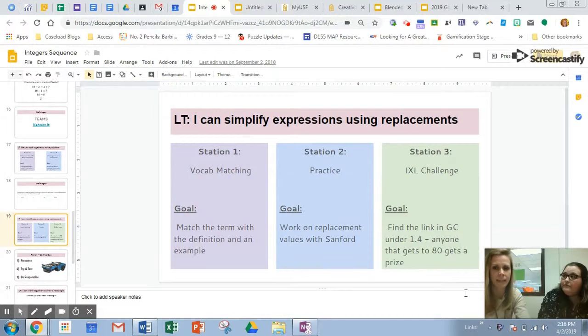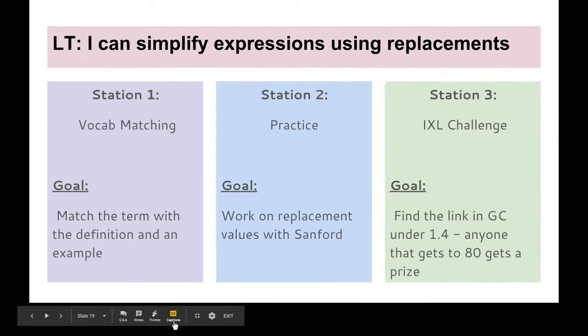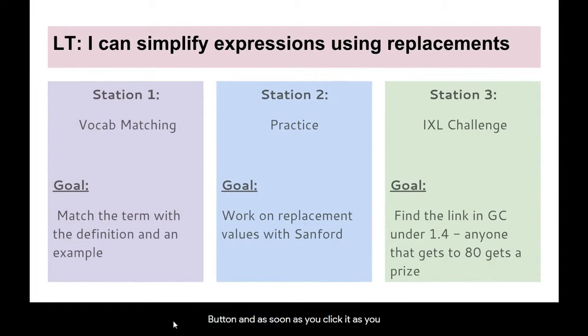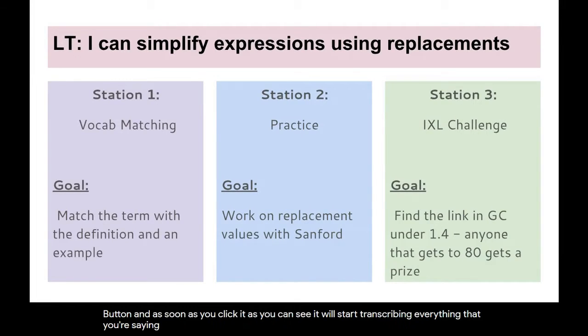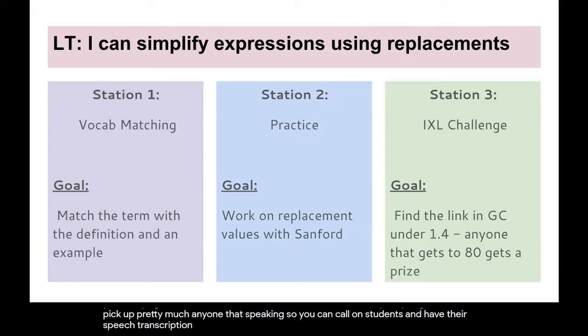I'm going to push the buttons and Kate's going to talk you through how you can set it up for the first time. It's super simple — all you do is go to present just like you normally would, and then down in your options at the bottom of the screen you have your closed captions button. As soon as you click it, it will start transcribing everything that you're saying. I have used this and seen it demonstrated in a pretty large room — it will pick up pretty much anyone that's speaking, so you can call on students and have their speech transcribed as well. Thanks so much Kate for the wealth of information about this assistive technology and for everything that you do for students and staff on a daily basis. You rock!